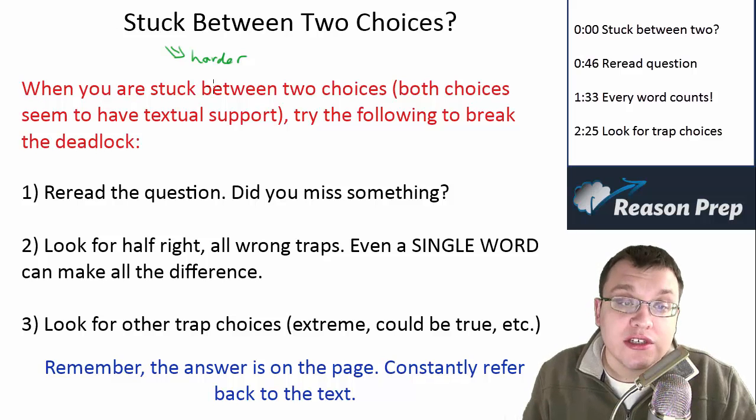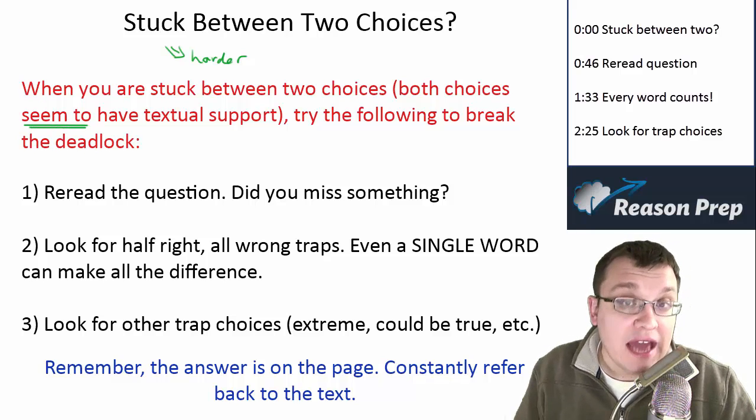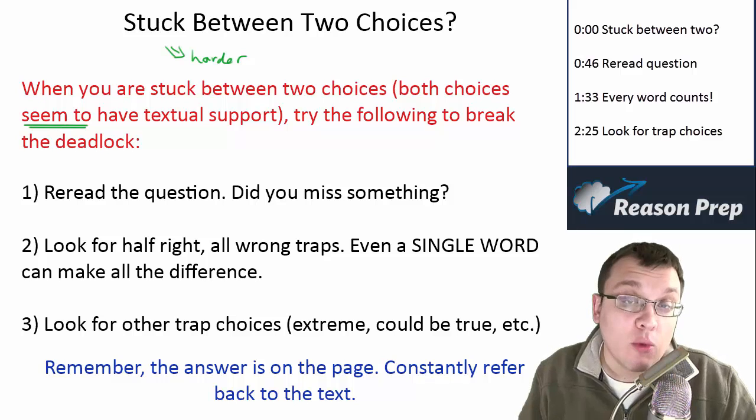So when you're stuck between two choices where both choices seem to—I'm gonna underline here—seem to have textual support, because clearly they both can't be right. One of them is gonna be based on what the passage is saying, the other is not, but at first they may seem to have textual support.